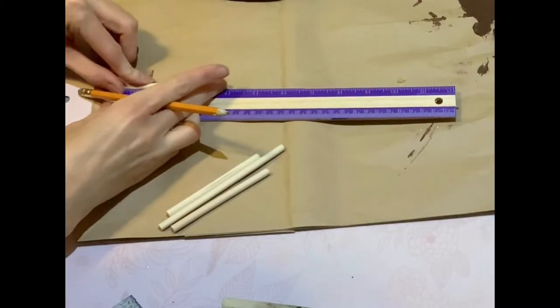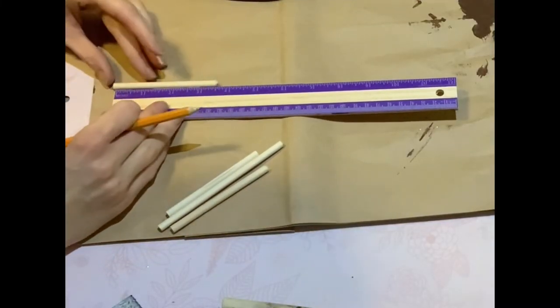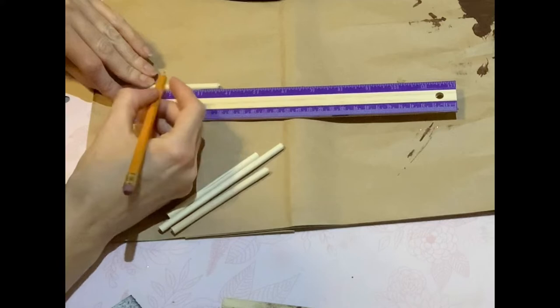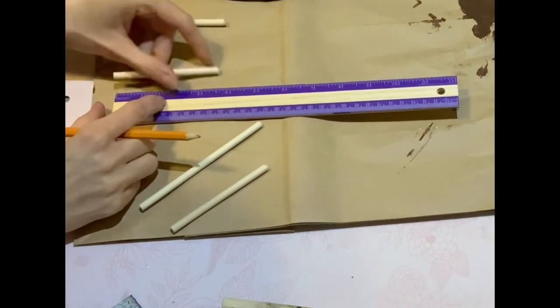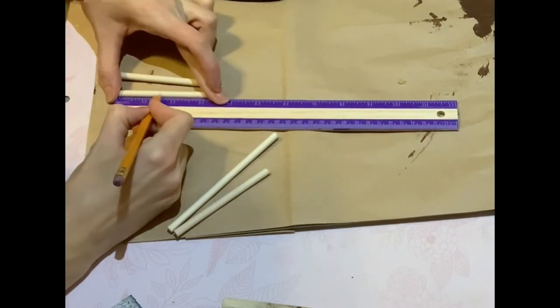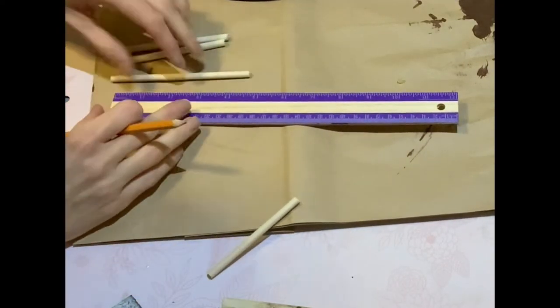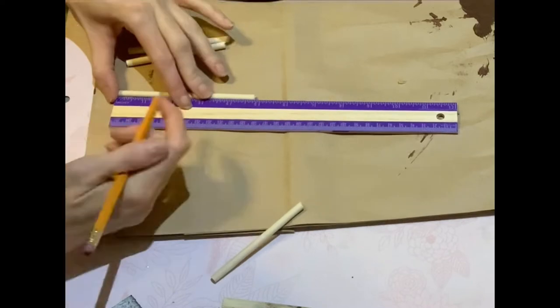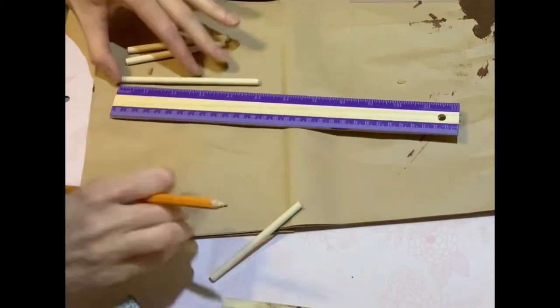I'm measuring the actual smaller dowel rods to one and a half inches in height. You're probably thinking a couple of those dowel rods look a lot longer, so you could get two out of one piece.